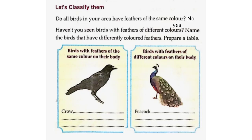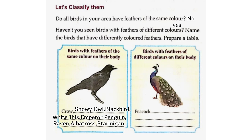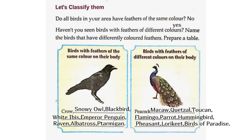Birds with feathers of the same colour on their body: Crow, Snowy Owl, Blackbird, White Ibis, Emperor Penguin, Raven, Albatross, and Ptarmigan. Birds with feathers of different colours on their body: Peacock, Macaw, Toucan, Flamingo, Parrot, Hummingbird, Pheasant, and Lorikeet.